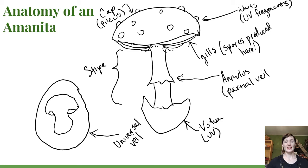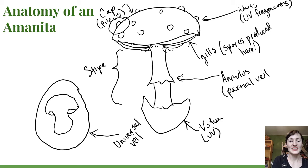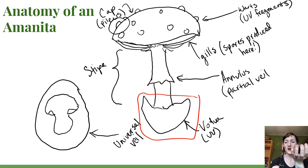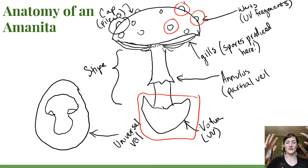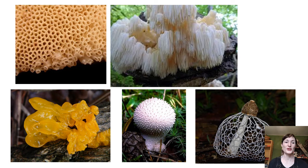As the mushroom grows, it inflates with water and pushes that eggshell open. You get little warts as pieces of eggshell stuck to the cap as it expands — sometimes in one big patch, sometimes in little dots, depending on conditions and the type of mushroom. The bottom of the eggshell remains as the volva, while the top fragments become those warts on the cap.